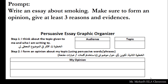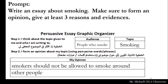The first thing you're going to do is organize your ideas in your graphic organizer. First, we know the topic is smoking. Now we have to think about our audience — who are we going to write this essay for? I'm going to say it is for people who smoke, because I'm going to try to convince them that my opinion is valid. My opinion is very simple: smokers should not be allowed to smoke around other people. It's better if you have a more specific opinion. I can't just say smoking should be banned — I have to be able to give reasons and evidences for that.